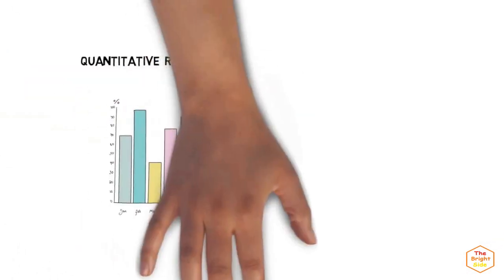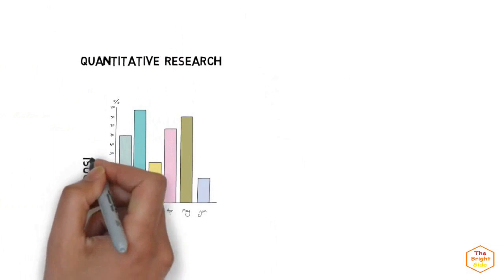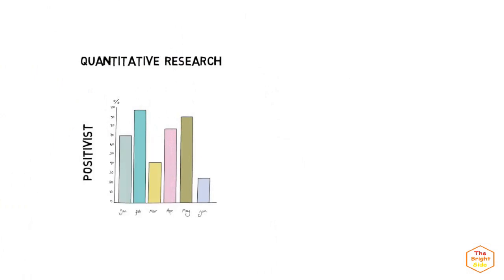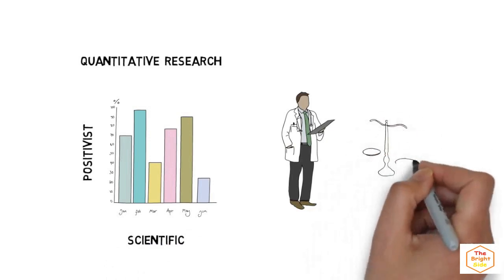Quantitative research follows a positivist research philosophy, which is based on a scientific approach to research. The researcher would observe objectively in an attempt to either prove or disprove their hypothesis.